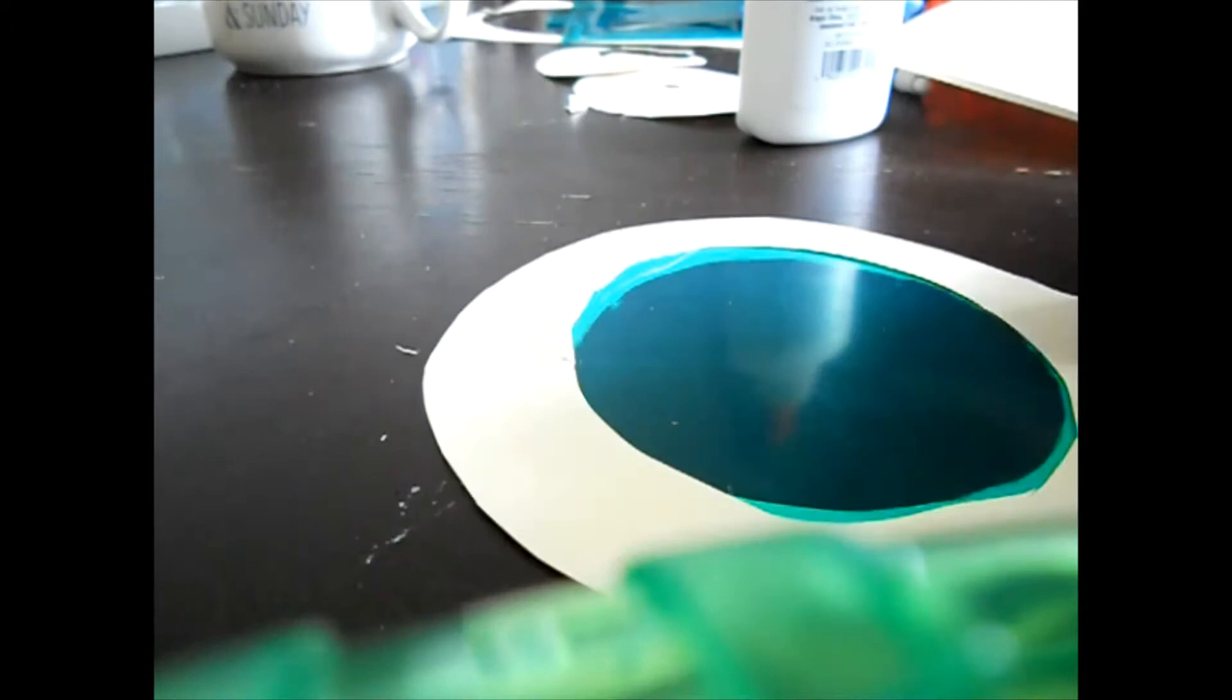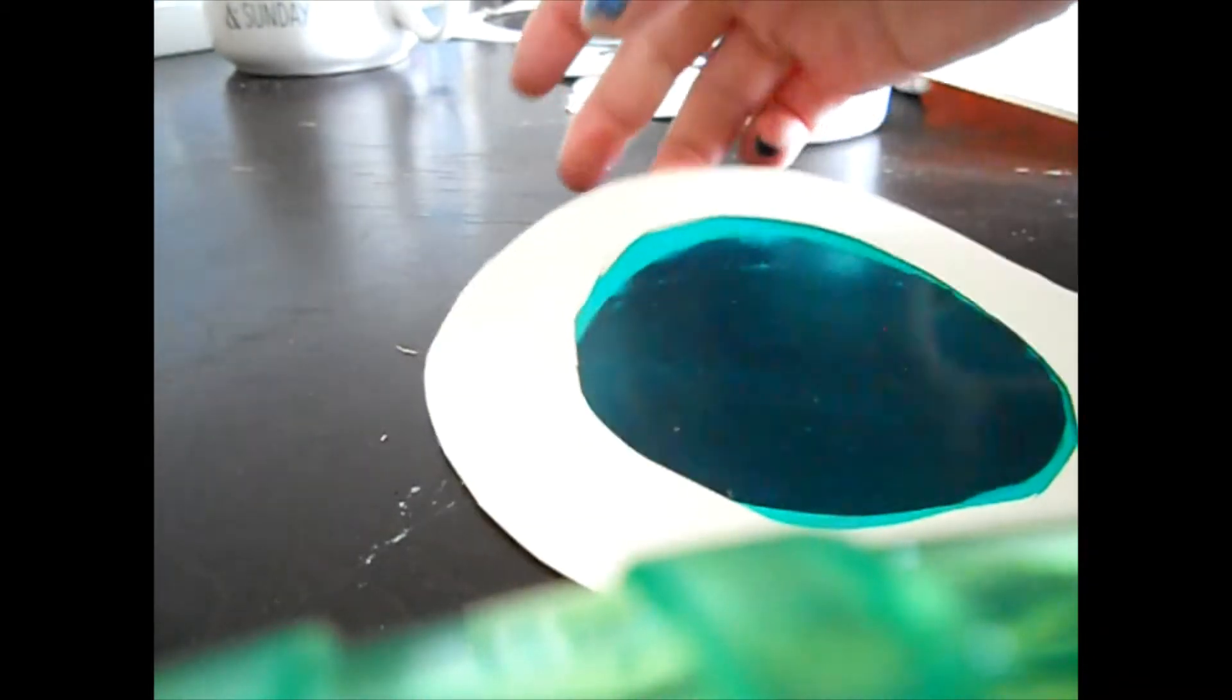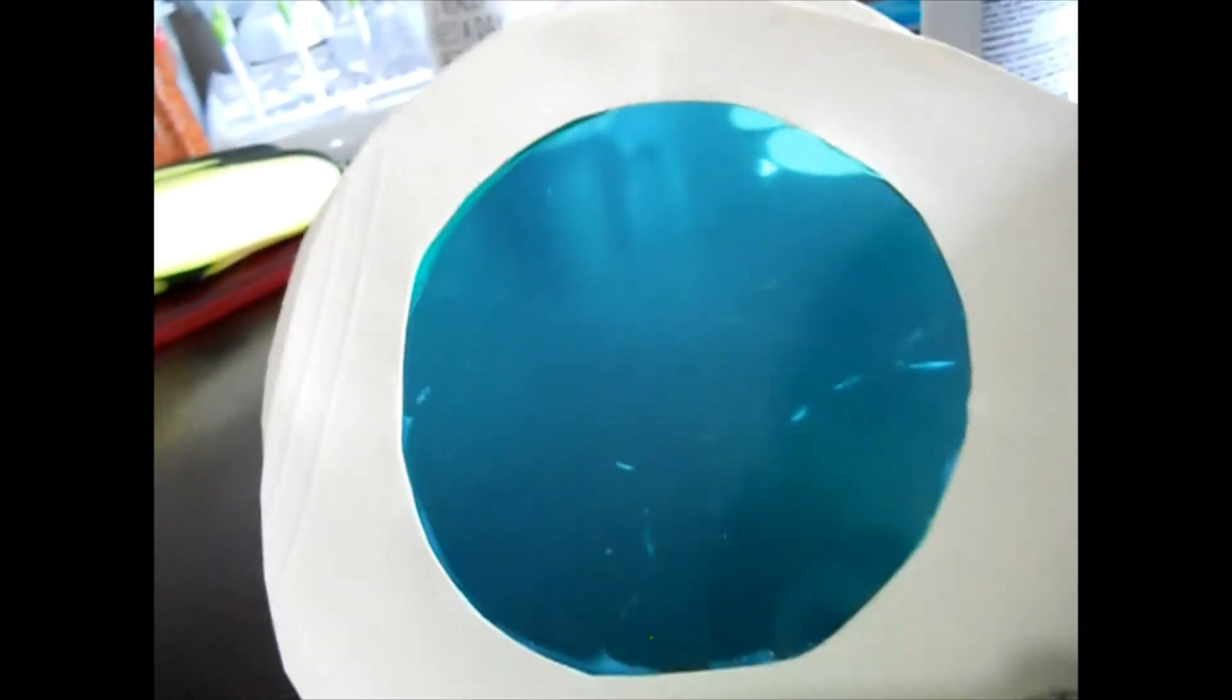But right now we're just focusing on shapes, and it could be a color because you can do, like, I'm doing green on the inside. But like I said, we're just going to focus right now on the shape, and it's a circular magnifying glass.